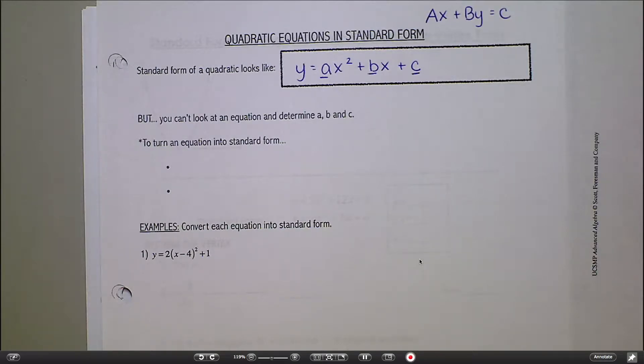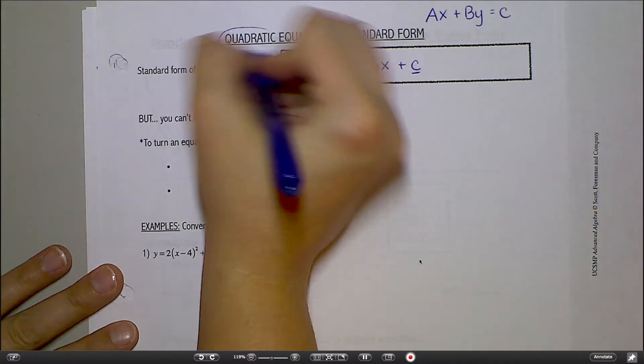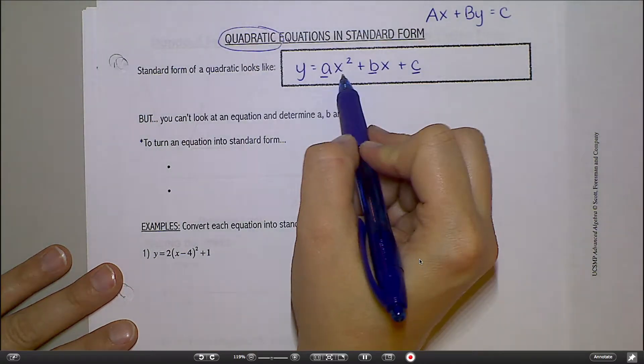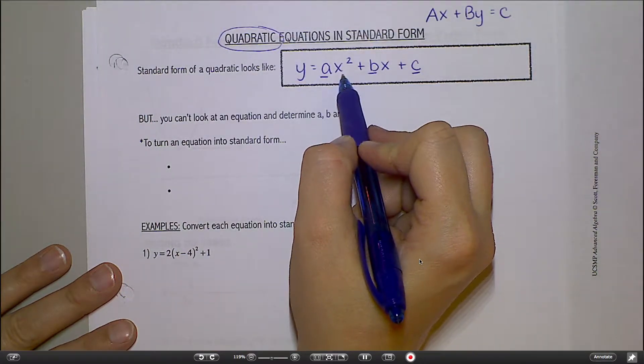This is a quadratic. Anytime I say quadratic, that means something with an X squared in it. So that's where the X squared is coming from.